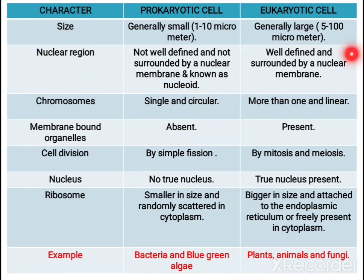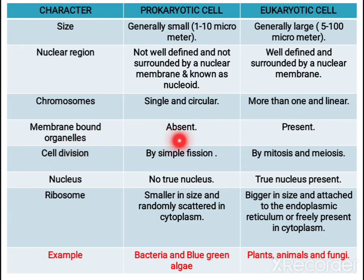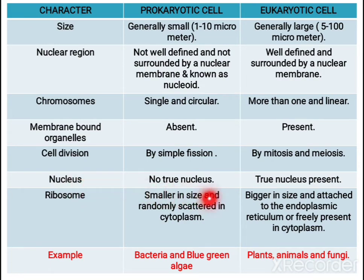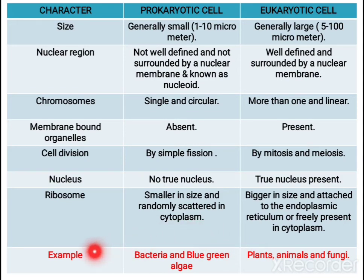Children, these differences can be asked in two-mark or three-mark questions. In prokaryotic cells, there is a single circular chromosome; in eukaryotic cells, there are more than one linear chromosomes. Membrane-bound organelles like mitochondria and chloroplasts are absent in prokaryotic cells but present in eukaryotic cells. Cell division in prokaryotes is simple; in eukaryotes both mitosis and meiosis can be observed. Prokaryotes do not have a true nucleus. Ribosomes are smaller in size and scattered in the cytoplasm in prokaryotes. Examples of prokaryotic cells: bacteria and blue-green algae.